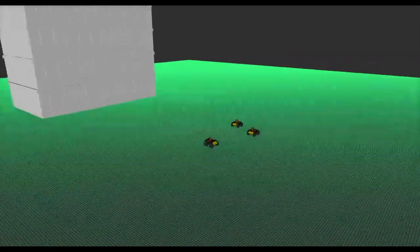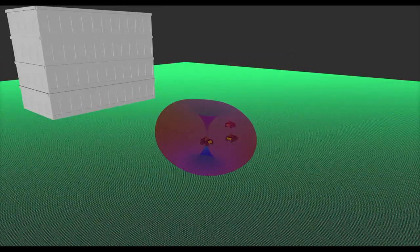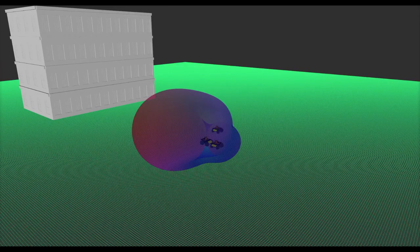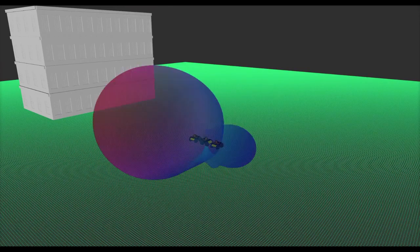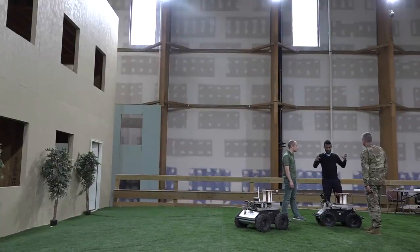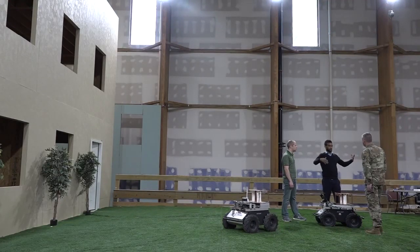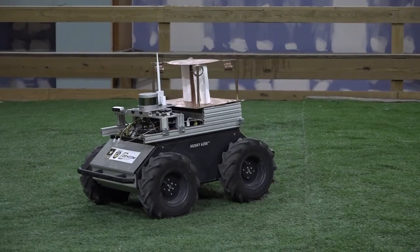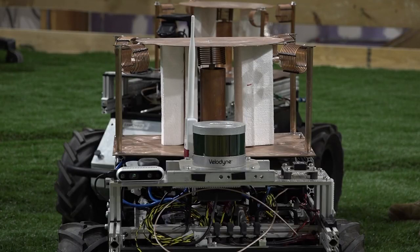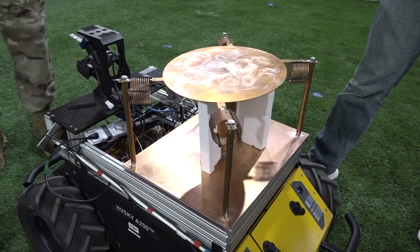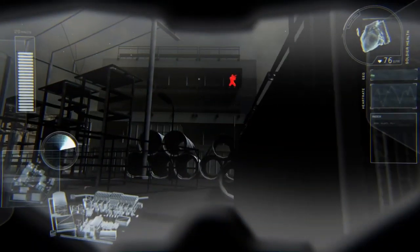An ARMY team has developed a new way to signal teammates in complex environments. They have designed small robots with compact, low-frequency antennas and AI to create a system that adaptively self-organizes into a directional antenna array. Add more robots, and the array becomes more focused and has increased range and reliability, and could enable targeted communication through buildings and in challenging environments.